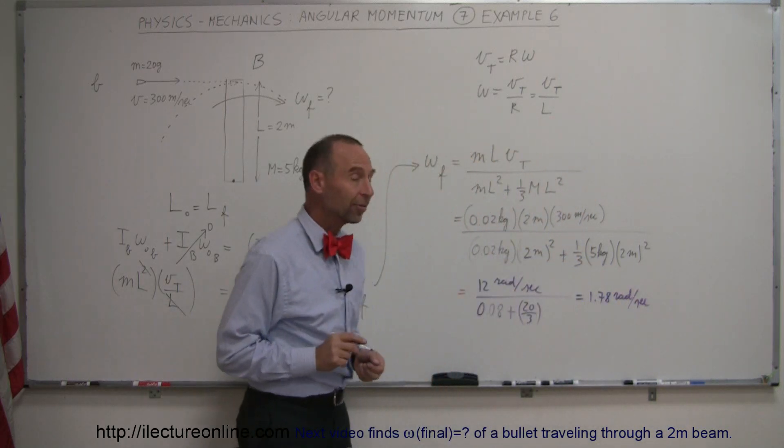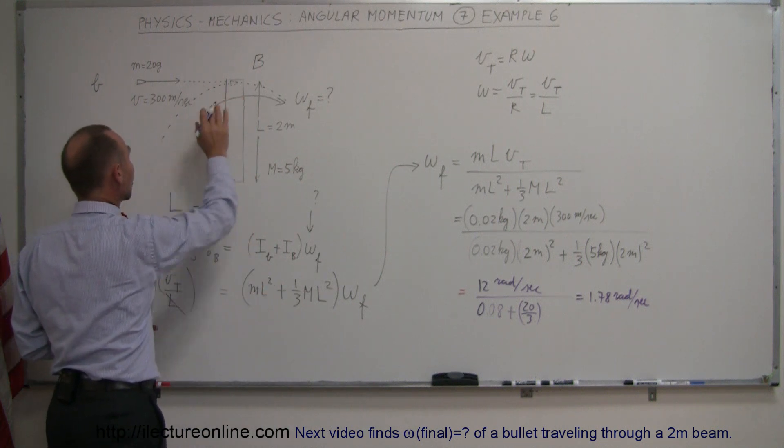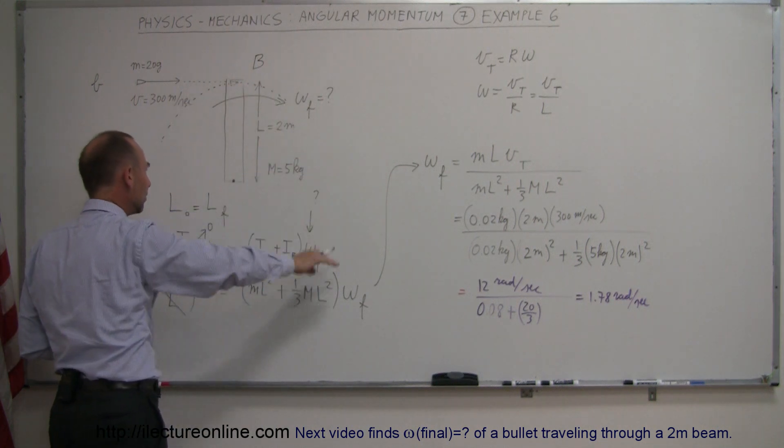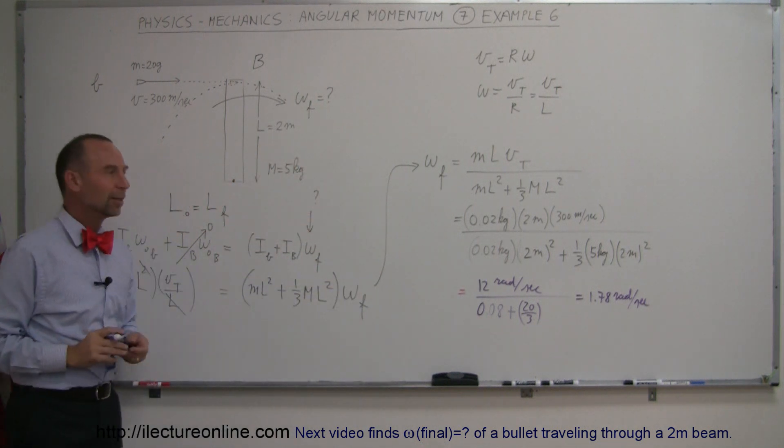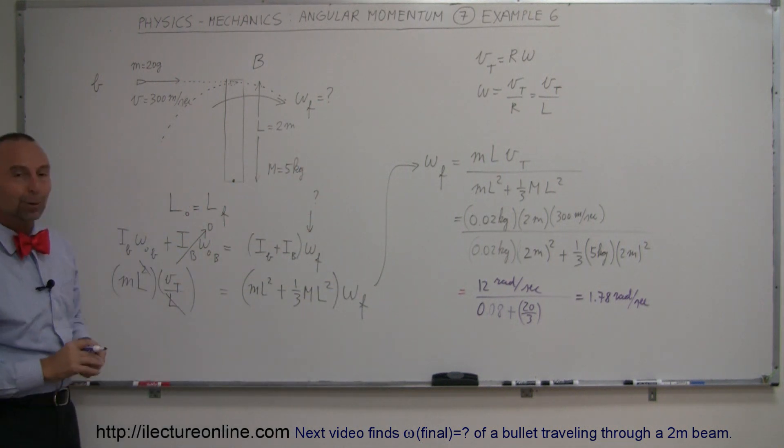So this is equal to 1.78 radians per second, and that would be the angular velocity of the beam after being struck with the bullet. If the bullet lodges itself in the beam, the beam and the bullet then would be rotating at 1.78 radians per second. And that's how you do a problem like that.